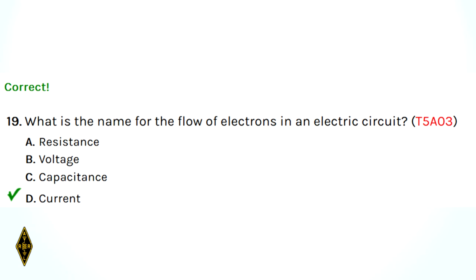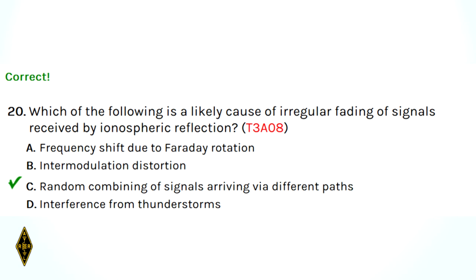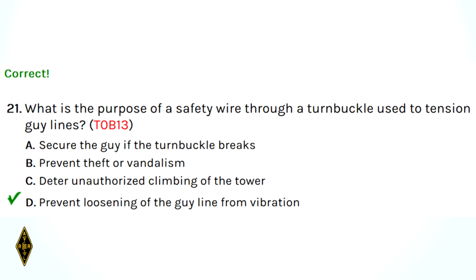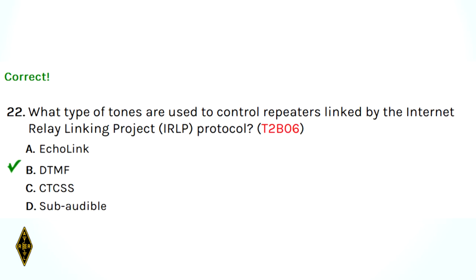Question 19: what is the name for the flow of electrons in an electric circuit? That's current flow. Question 20: which of the following is a likely cause of irregular fading of signals received by ionospheric reflection? Another name for multipath — it's the random combining of signals arriving via different paths. Question 21: what is the purpose of a safety wire through a turnbuckle used to tension guy wires? It's to prevent the turnbuckle from rotating and coming loose. Question 22: what types of tones are used to control repeaters linked by IRLP or Echolink? DTMF — dual-tone multi-frequency — like Ma Bell's touch-tone phone.